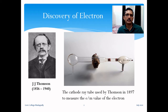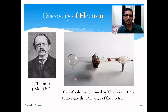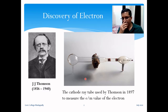Let us start with the discovery of electron by J.J. Thomson in 1897. In the figure we can see the cathode ray tube used by Thomson for the measurement of charge-to-mass ratio, or e/m ratio, of the electron beam. This type of glass tube was used in physics starting from the 1850s — Henrik Geissler was the first person who designed them.